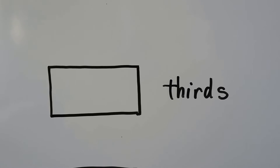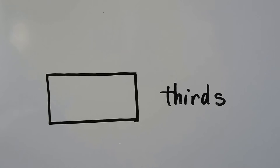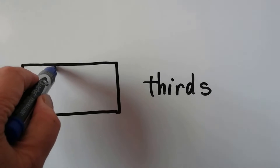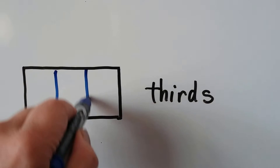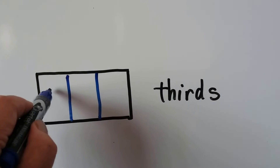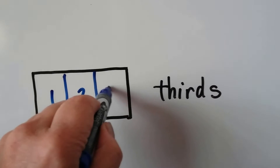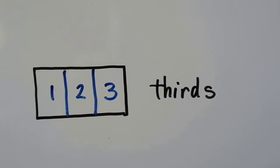For thirds, that means we need three equal parts. We could draw a line here and a line here, and we'd have one, two, three equal parts.